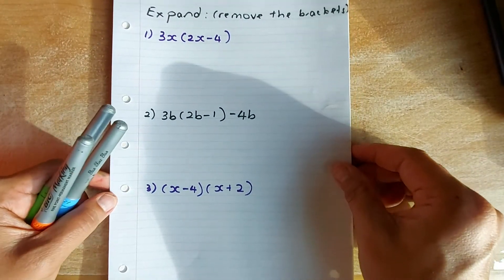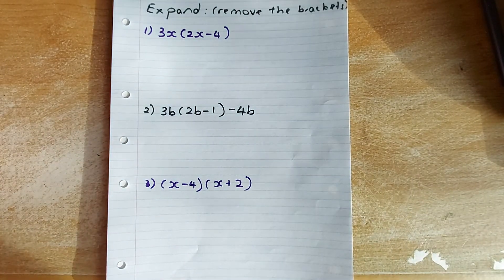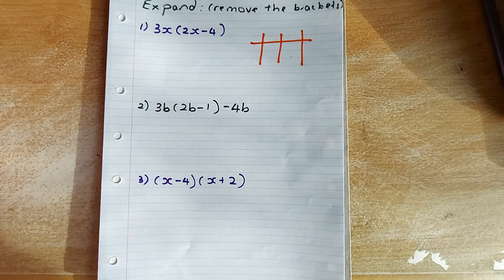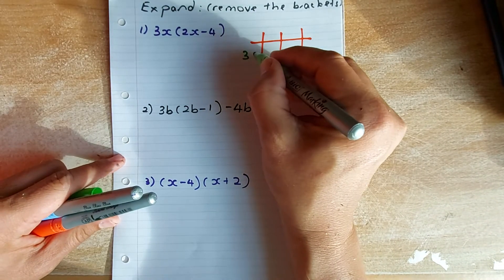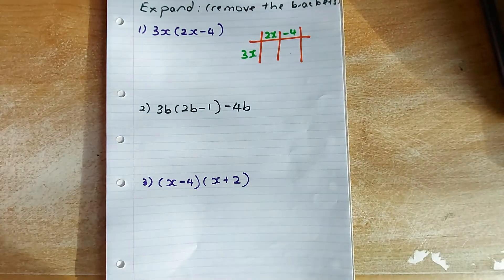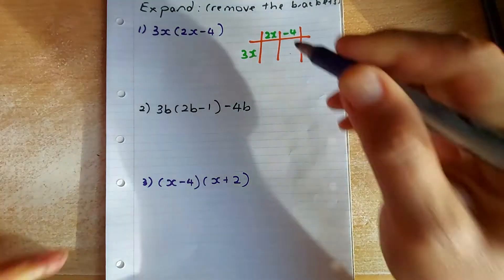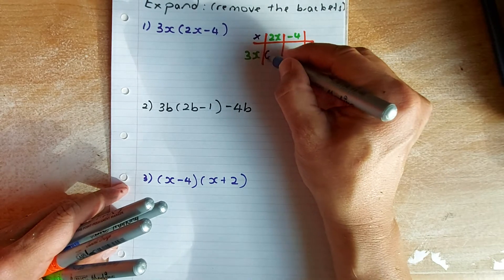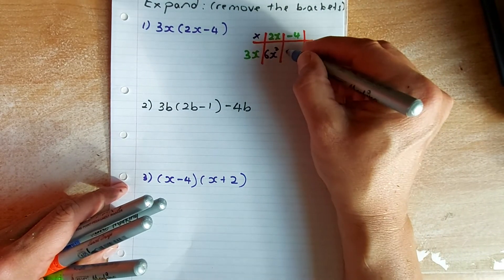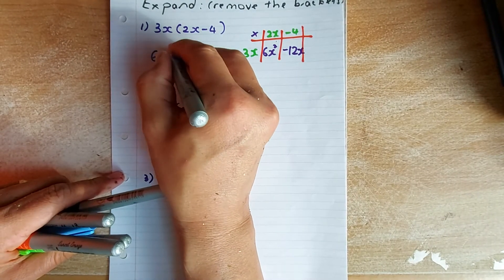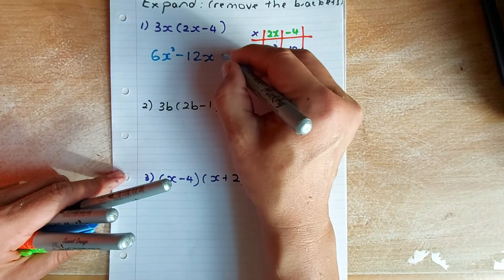Now we're going to do expanding. Expanding in algebra means to remove the bracket. The best way is to use the grid method — just draw a grid. Put 3x on one side, then 2x and minus 4 on the other. Multiply them: 2x multiplied by 3x gives 6x squared, and minus 4 multiplied by 3x gives minus 12x. The answer is 6x squared minus 12x. That's a simple take in the exam.